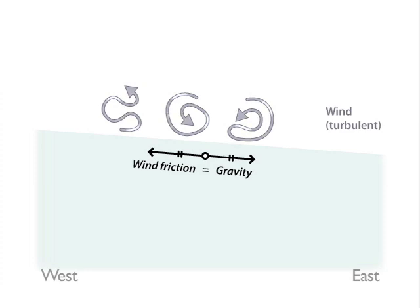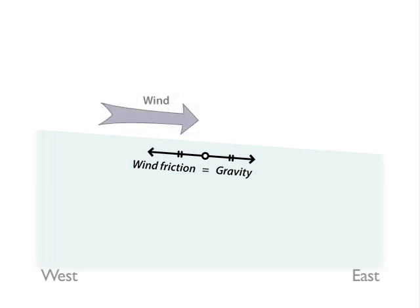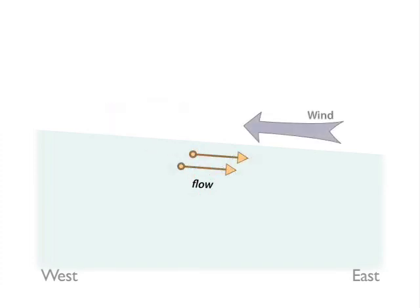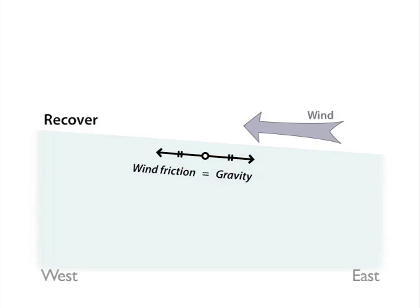Air turbulence is a normal and common occurrence in the equatorial region. Turbulence can sometimes create an eastward wind burst. On a small scale, this eastward wind interferes with the wind-gravity forces that maintain the upward western slope of the water surface, but the wind-gravity balance recovers quickly.